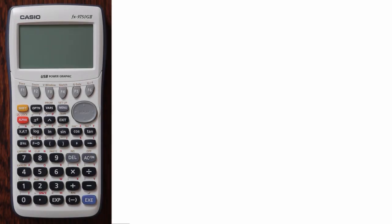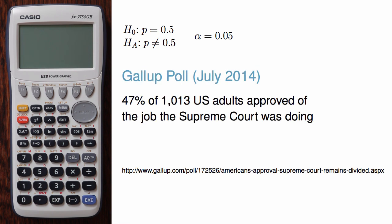Suppose we are interested in determining whether more or fewer than 50% of Americans approved of the job the US Supreme Court was doing. We could summarize this as a hypothesis test. The null hypothesis is that the approval rating is 50%, and the alternative hypothesis is that the approval rating is different than 50%. We use a significance level of alpha equals 0.05. According to a July 2014 Gallup poll, 47% of American adults approved of the job the Supreme Court was doing. The sample included data on 1,013 adults.